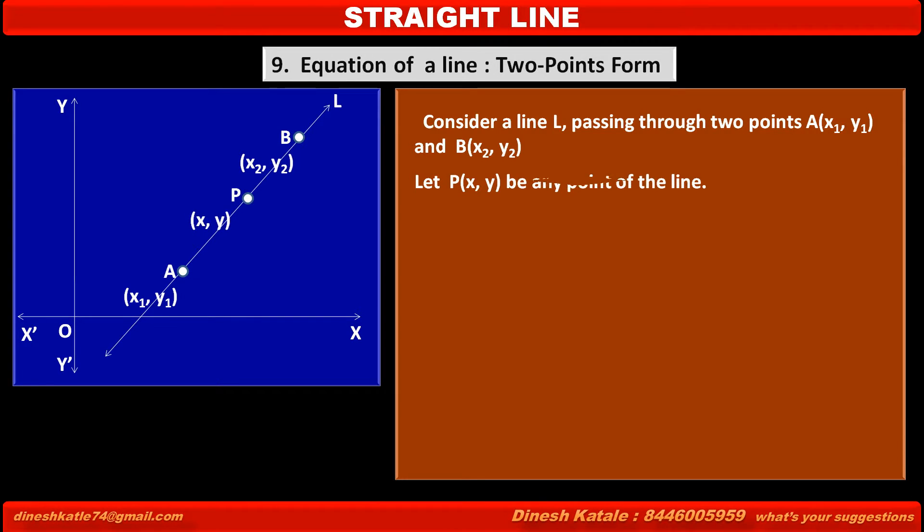Let P(x, y) be any point on the line. Therefore, points A, P, B are collinear, meaning these three points are on the same line.